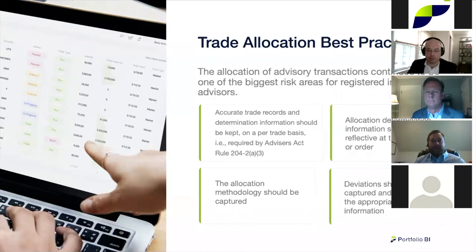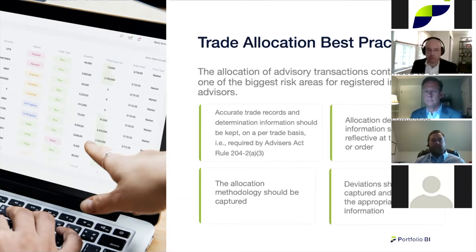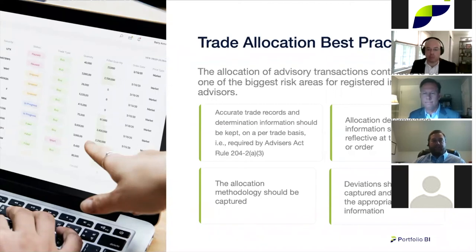For anything other than pro rata allocation — which can take different forms, whether by assets or percentages — compliance officers should require their investment teams to document allocation decisions prior to execution. The books and records requirements really get to the spirit of this: having trade tickets that indicate who's being allocated what before execution is important. Changes do happen from time to time, and there's not necessarily anything fraudulent when they do, but the documented rationale around those exceptions needs to be robust and retained.